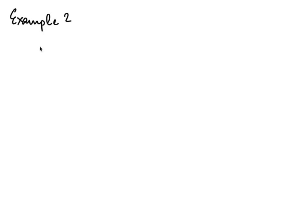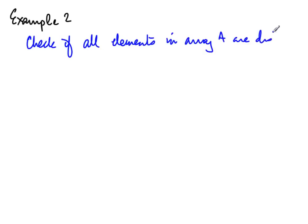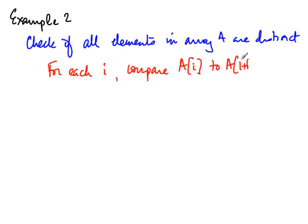Let us move on to another example: checking if all elements in an array A are distinct. You have n elements and want to verify they are all different. For each i, you compare A[i] to everything to its right — A[i+1] through A[n-1]. If A[i] equals something to its right, the elements are not all distinct. If no match is found for any i, all elements are distinct. Let us write this as a formal algorithm.